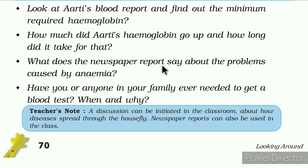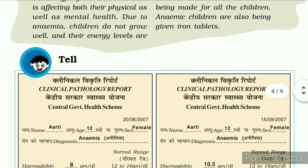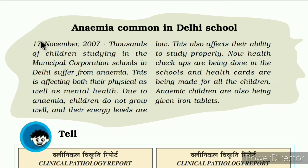What does the newspaper report say about the problems caused by anemia? Here is the news. So the answer is: due to anemia, children do not grow well and their energy levels are low. They are affected both physically and mentally. These are the two points you have to write.